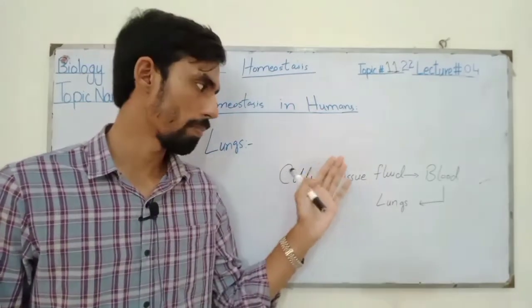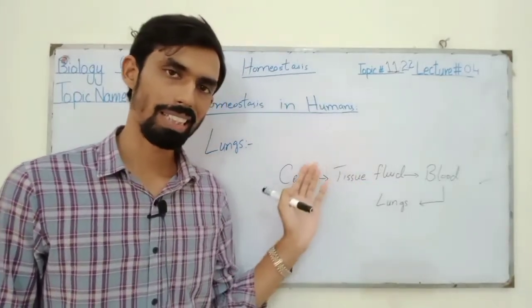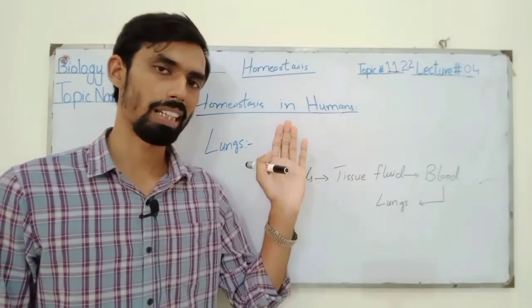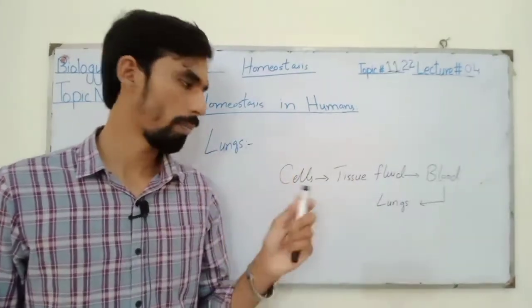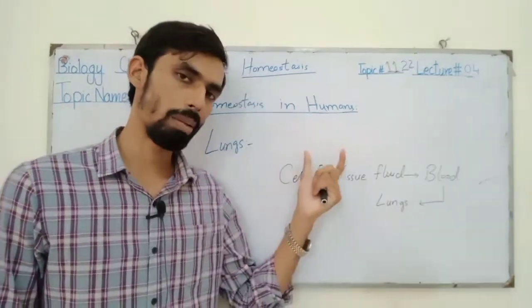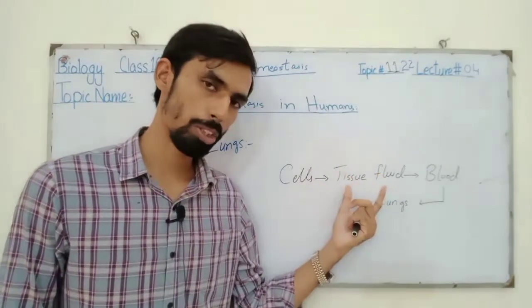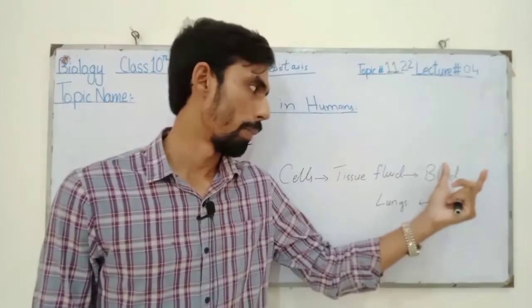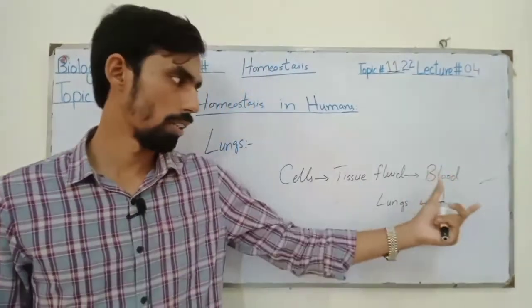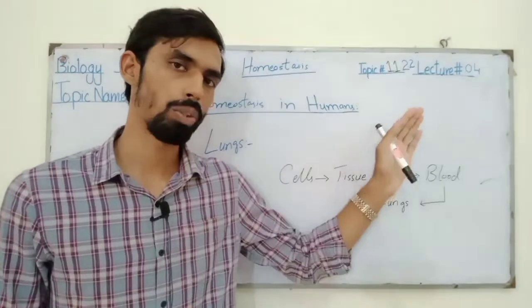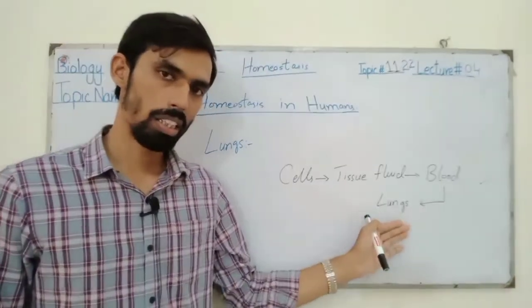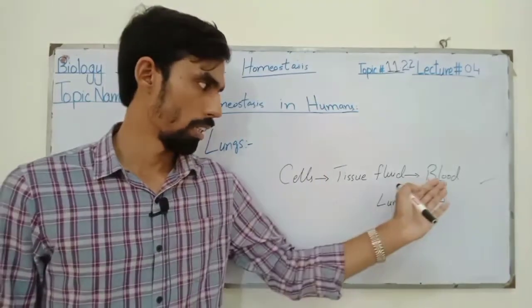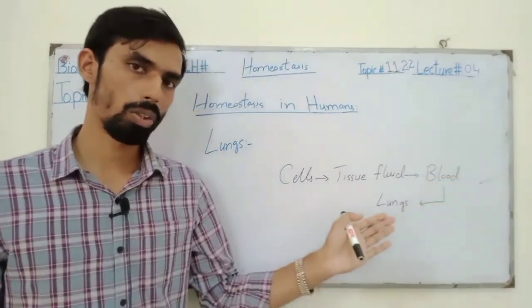So the carbon dioxide which we produce in the cells moves into tissue fluid. The cells' waste material, which is produced, is used in our body. Because it is in excess quantity, the cells move carbon dioxide to the tissue fluid. From tissue fluid, carbon dioxide moves to our blood. Our blood carries carbon dioxide to the lungs. This is the whole process from the previous chapter.